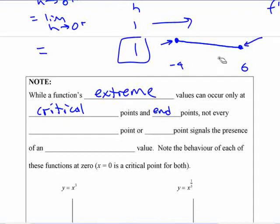OK? The end points aren't critical points. Critical points are in the interior, in between those two. Not every, so while a function's extreme values occur at critical points and end points, not every critical or end point signals the presence of an extreme value, right? We've already seen this.